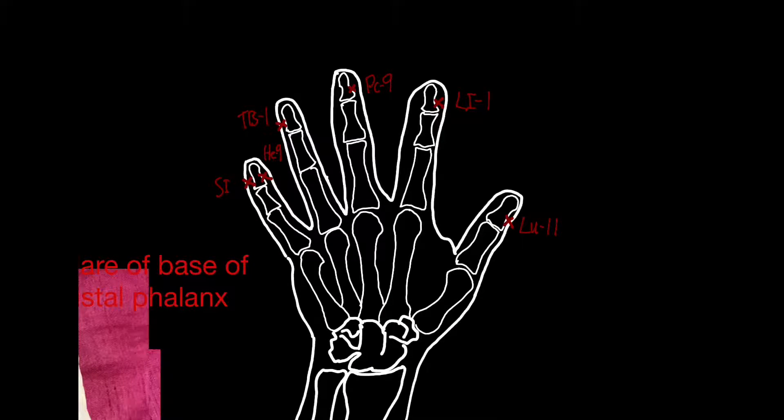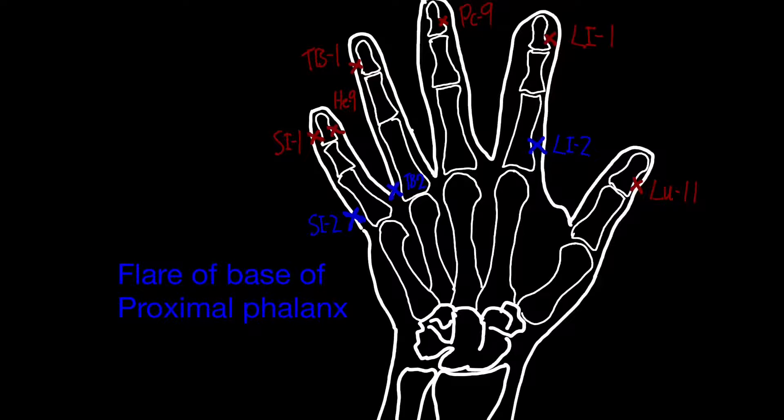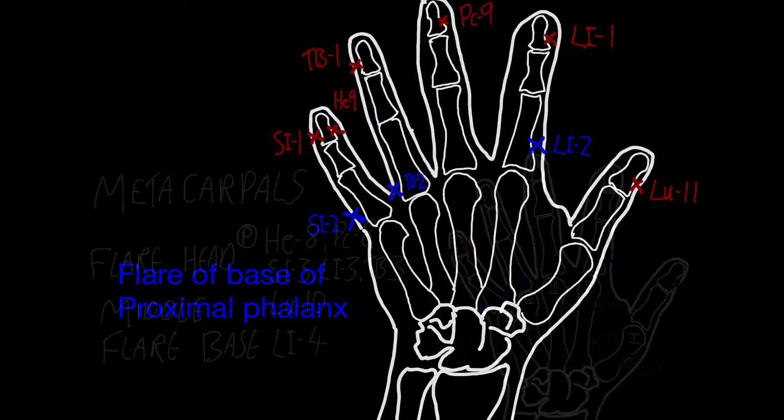At the flare of the base of the proximal phalanx following down, we've got large intestine 2, small intestine 2 both at the junction of the red and the white skin on the edges of the hand, and then triple burner 2.